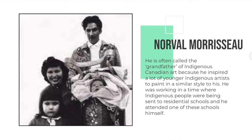When he was working, it was a time where Indigenous people were still going to residential schools, and he actually attended one of these schools himself. In this picture you can see Norval Morisot in the back, and there's his wife and two daughters in this photograph.